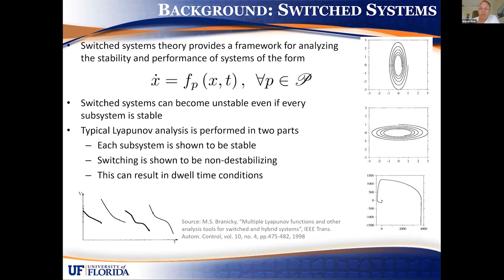Worse yet, we want to focus on problems in the image feedback domain where we're not just switching between different stable subsystems, but switching between a stable subsystem and an unstable subsystem. The unstable subsystem comes from the fact that when we don't have feedback, we're essentially dead reckoning — we have an open-loop estimate of where we are in the world — and that's going to be unstable over time.